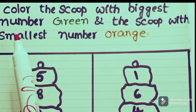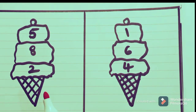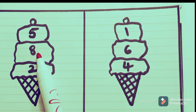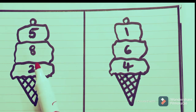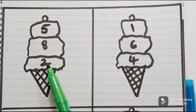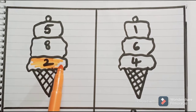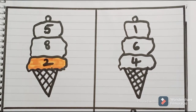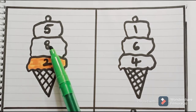Now let us see one more worksheet: color the scoop with the biggest number green and the scoop with the smallest number orange. It is an ice cream with three scoops. The three scoops have numbers 2, 8, and 5. Which number comes earlier? 2 comes earlier, so it is the smallest number — color this scoop in orange. After 2, 5 comes; after 5, 8 comes. So the biggest number is 8 — color it in green.